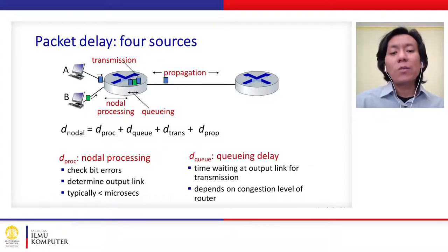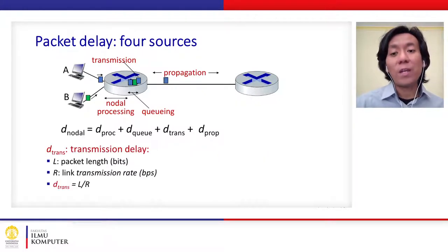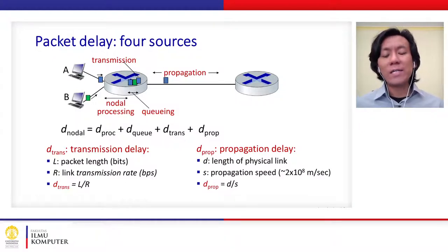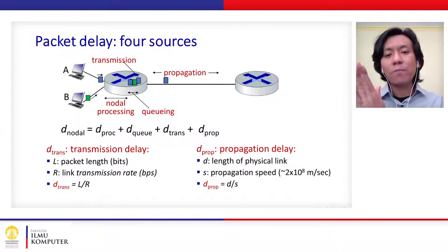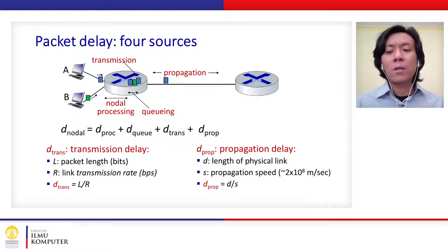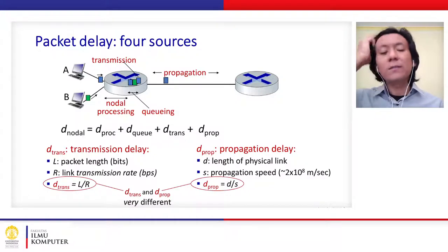The second delay is queuing delay. The third is transmission delay, which occurs when the packet is pushed out to the link. The fourth is propagation delay — the actual duration of the packet being propagated through the physical link to another router. Note that transmission delay and propagation delay are two different things.